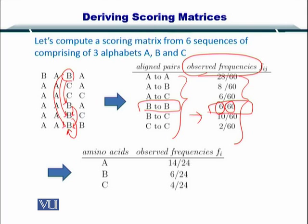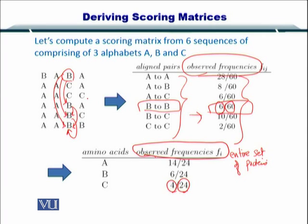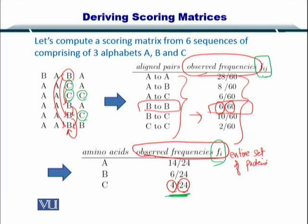And the observed frequencies here are for the entire set of proteins. So here four over 24 will mean you have one, two, three, and four. So you have four over 24. And here the f_ij is computed and f_i is computed. So f_ij is the conversion of one amino acid to another, while f_i is the frequency of each amino acid.